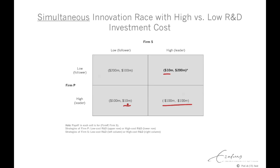The best scenario for firm S is to become a leader while its rival follows a low effort strategy. And the best scenario for firm P is when both follow a low effort strategy, because it has limited financial resources at the time.